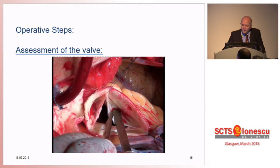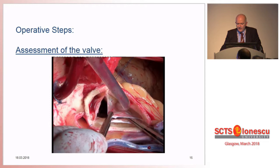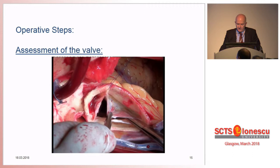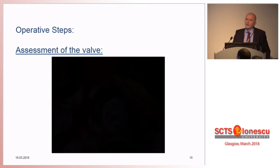I will now take you through the important steps of the operation. What I first do is measure geometric height — like in this case, 20 millimeters. There may be small fenestrations, which are usually irrelevant. Fenestrations only need to be addressed if they're involved in the mechanism of prolapse.